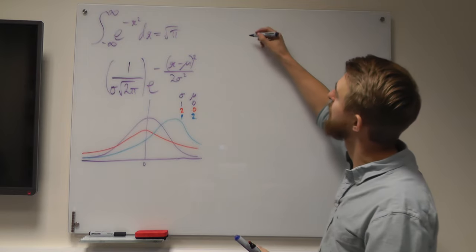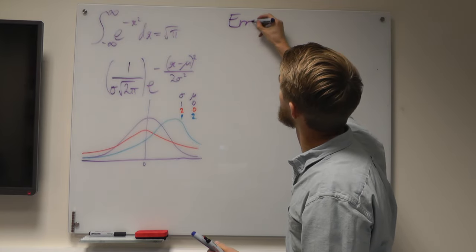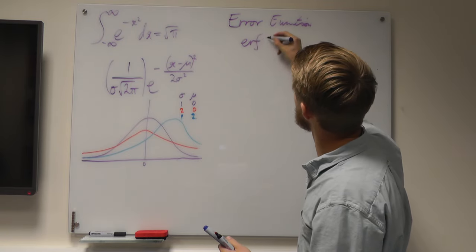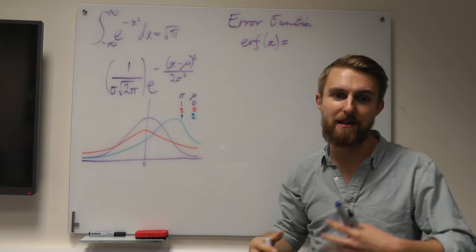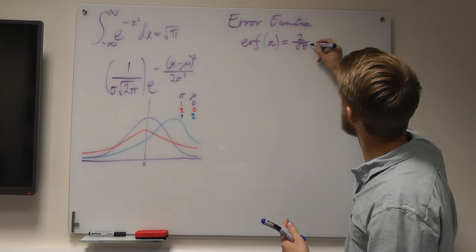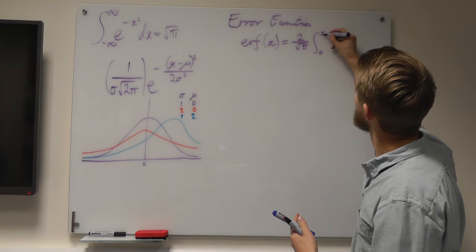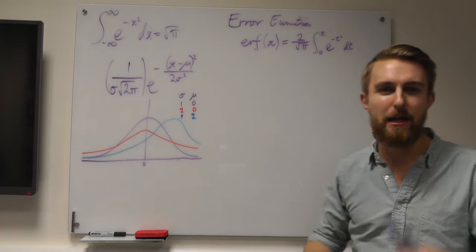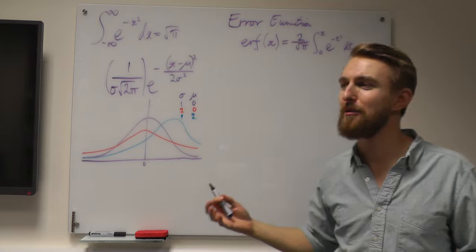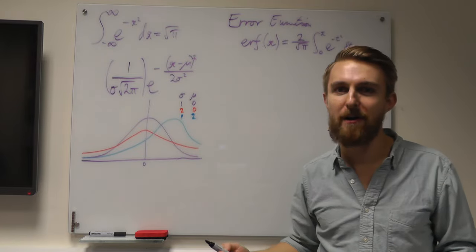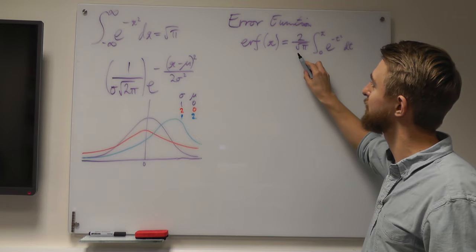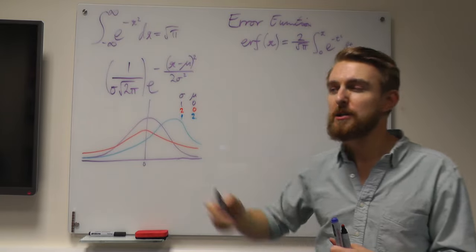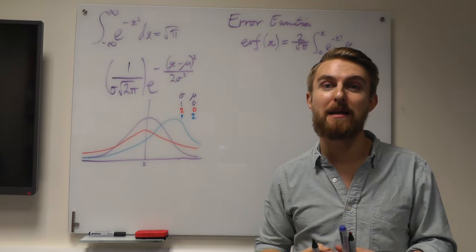So let's introduce the error function, abbreviated as erf. It is defined as 2 divided by root pi, times the integral from 0 to x of e to the minus t squared dt. The variable t is what we call a dummy variable — it doesn't appear outside the integral at all. When we integrate and substitute x in for t, the t disappears. It's there simply to allow us to manipulate x in a certain way.